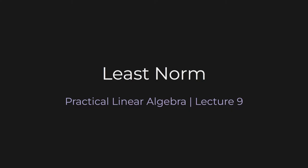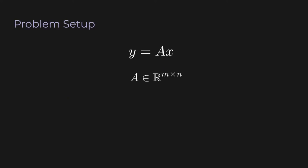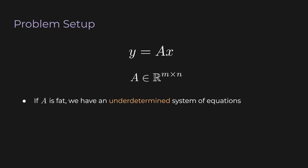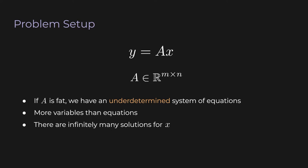We've had a good look at least squares, so now it's time to look at its twin, least norm. In our problem setup, we've got a vector y that equals a matrix A times a vector x. But this time, A is a fat matrix, meaning it has fewer rows than columns. This means we have an underdetermined system of equations — more variables than equations — so there are infinitely many solutions for x. No matter what y we are given, we can always find some x to satisfy this equation.